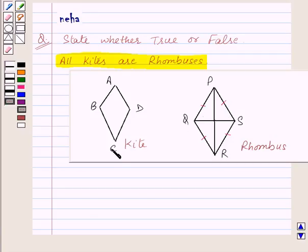Now let's see what is a kite. A kite is a quadrilateral with exactly two pairs of equal consecutive sides. That is AB is equal to AD and BC is equal to DC.